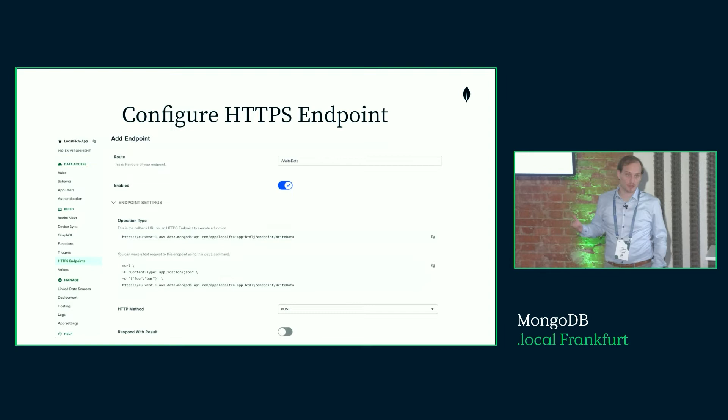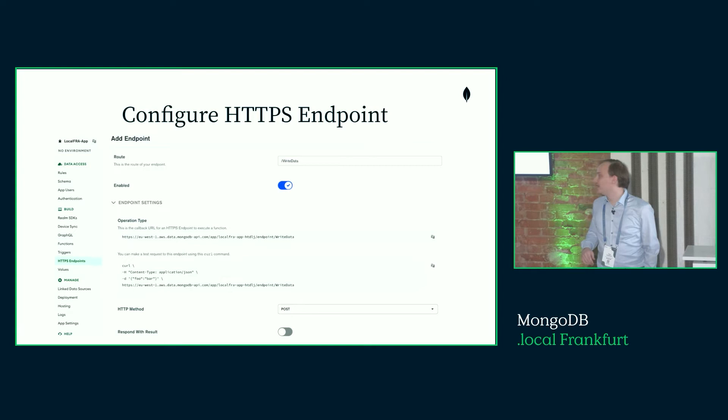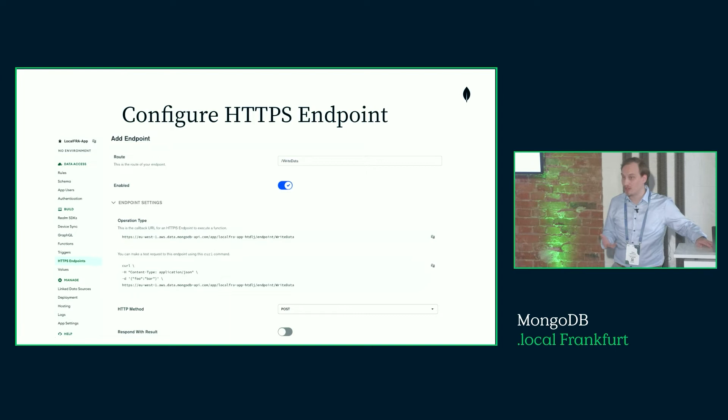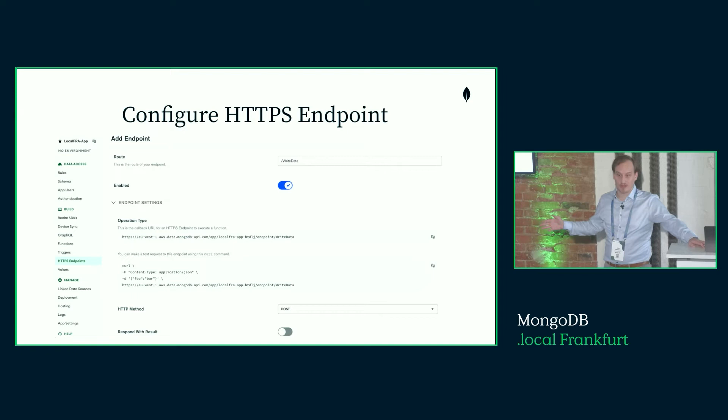For the HTTPS endpoint, click create, give it a path — we'll start with the write operation, calling it 'write_data'. Define the expected request type and whether to return a response. In my case I'm not returning a payload — though you might want to return the document ID on success. Below, you get the actual endpoint URL that your application will call.